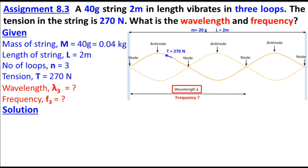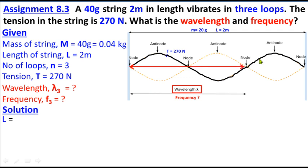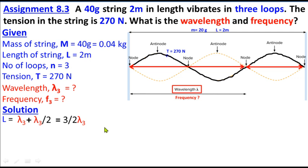When length is known, we can find lambda, and when lambda is known, we can find length — this relation should be memorized. Looking at the full string length, one complete wave is moving inside. From one end to the other is the complete length. One full wavelength spans from here to here, which is lambda, and node to node is lambda by 2, which is half lambda. So total length equals lambda plus lambda/2, which is 3/2 lambda.